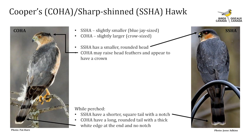The sharp-shinned hawk and Cooper's hawk are two very similar-looking hawks best identified by size. The sharp-shinned hawk is slightly smaller — about 10 to 14 inches, approximately the size of a blue jay or mourning dove. The Cooper's hawk is about 15 to 20 inches — about the size of a crow. When perched, the sharp-shinned maintains a rounded head shape; the Cooper's will raise its head feathers creating a crown-like appearance. Their tails also differ: the sharp-shinned has a squarish tail with a notch in the center, while the Cooper's has a long rounded tail with a thick white band at the end and no notch.